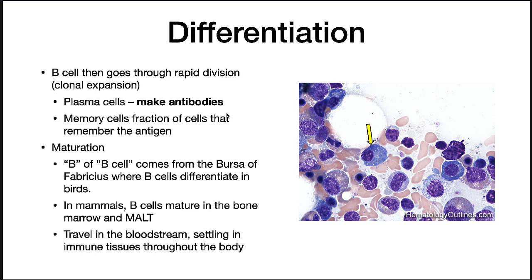A little bit about the maturation of B cells. The B of B cell comes from Bursa Fabricius, which is an organ found in birds where B cells differentiate. In mammals, we don't have a Bursa Fabricius, and B cells mature in the bone marrow and the mucosal-associated lymphoid tissue. They then travel in the bloodstream — T cells and B cells after they mature — and they settle into immune tissues throughout the body, some on the digestive tract and some in the lymph nodes.